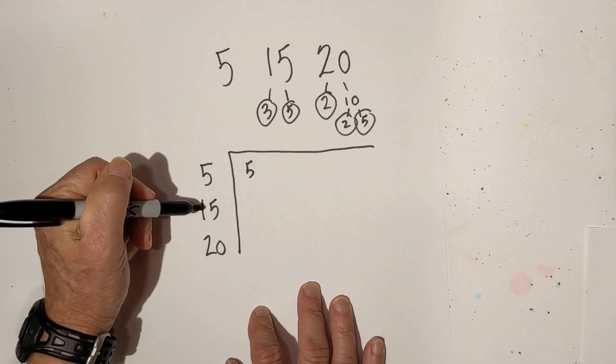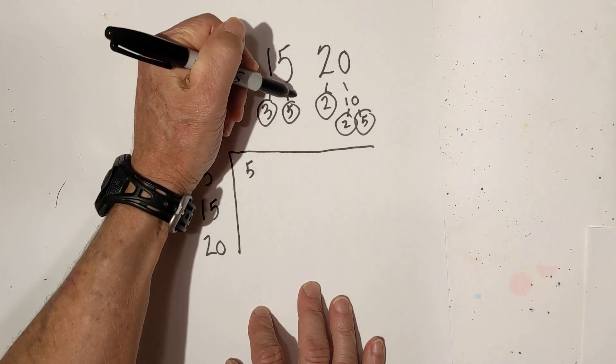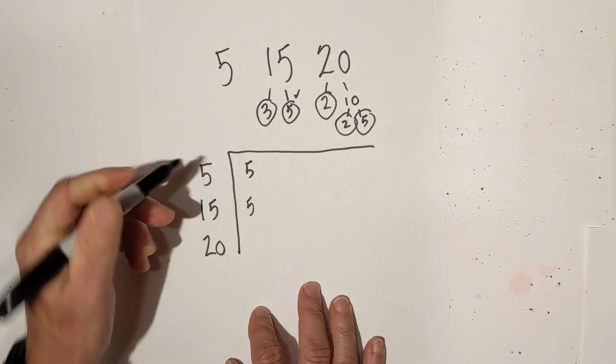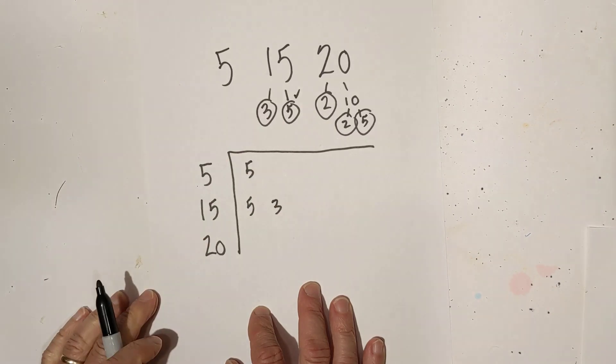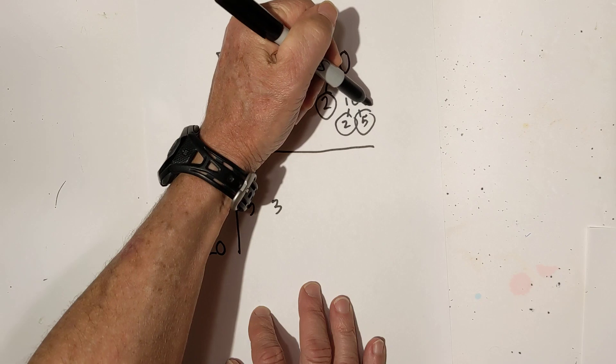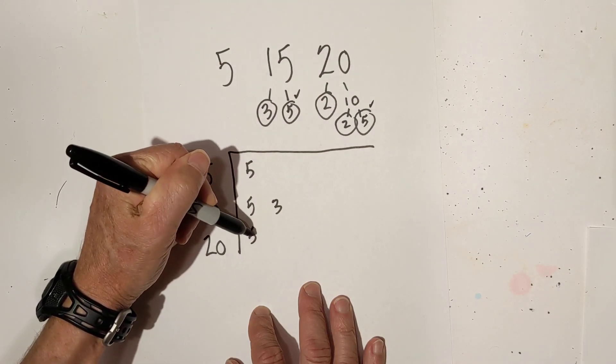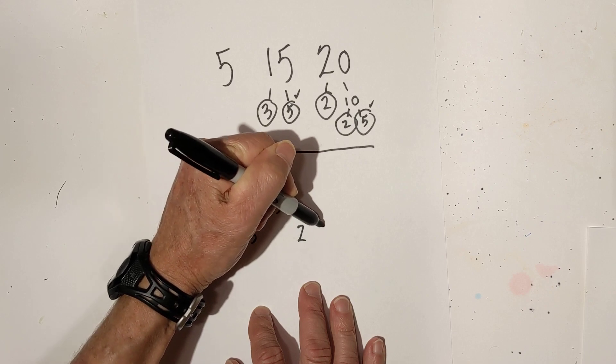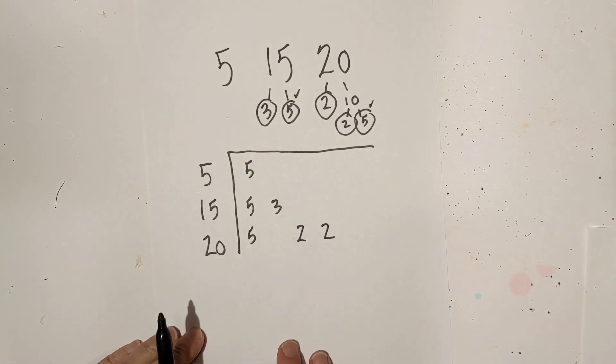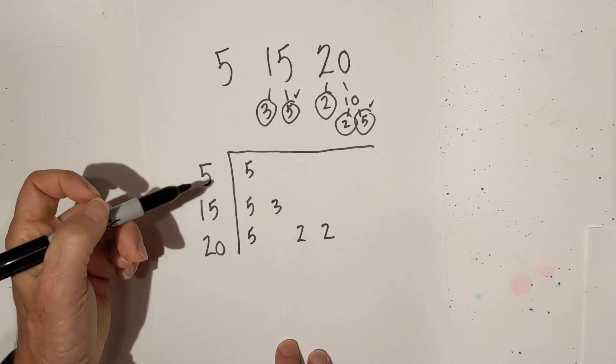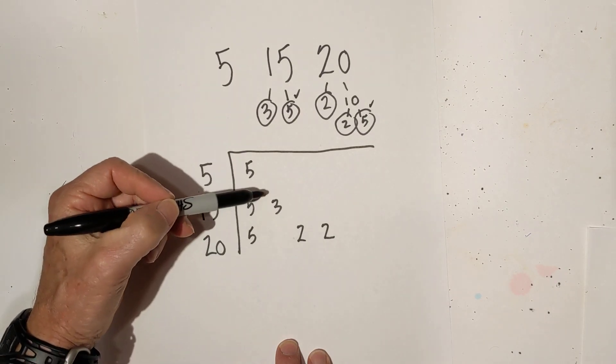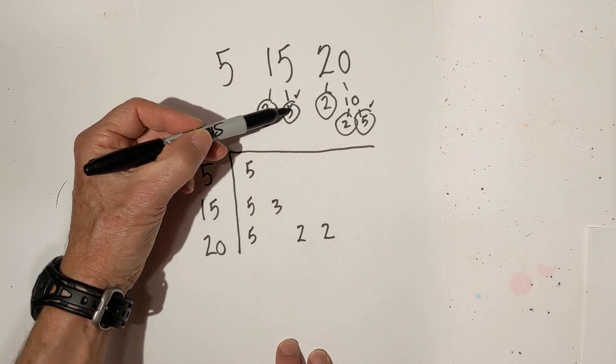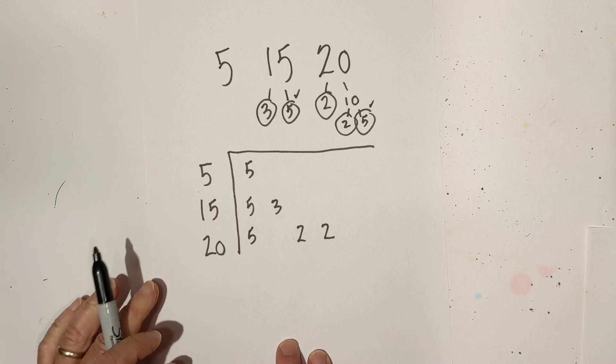Next, for 15 I am going to write this 5 underneath the 5 and then I am going to write a 3. And then for 20 I am going to write the 5 under the 5. I don't have a 3 so I am going to skip it. Then I have a 2 and a 2. So what I tried to do was match up the numbers with what I have. So I took the 5 here, 5 here and wrote them all in this column.